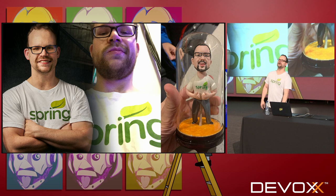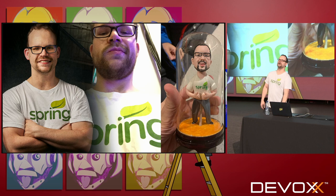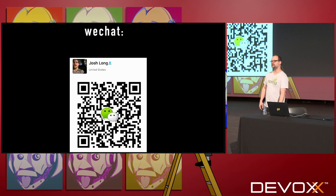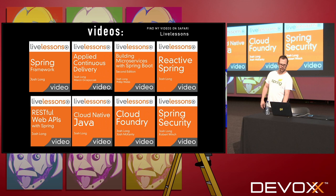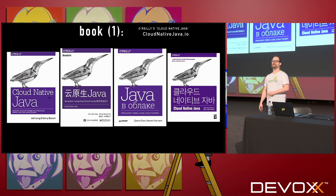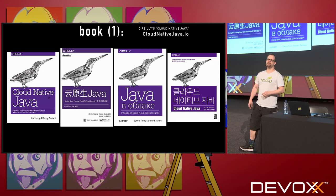My name is Josh Long. I work on the Spring team — I'm a Spring developer advocate. I've been there for almost 10 years officially, unofficially more than that. I've got training videos in Safari. I did a book called Cloud Native Java, which I wrote a couple of years ago — it's all about how to build applications intended for the cloud. This really set me on the path of leveling up my testing game.